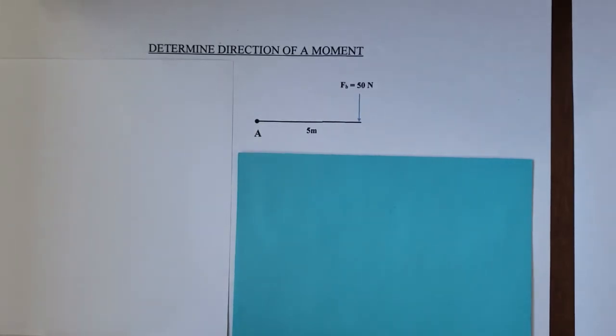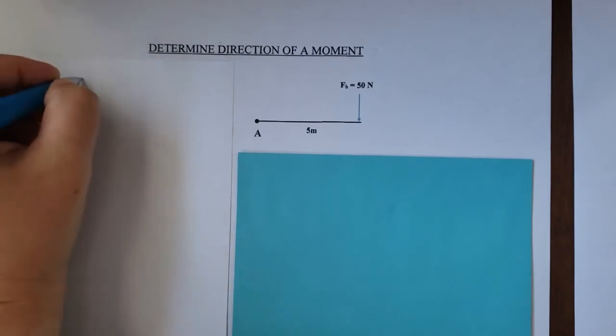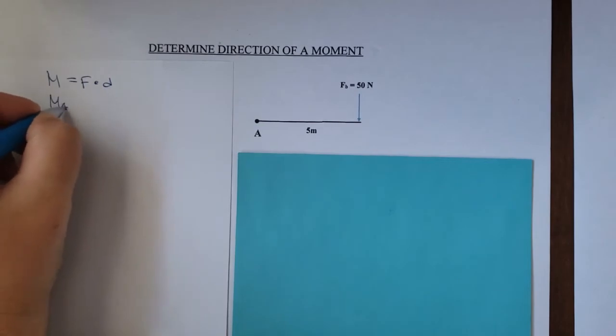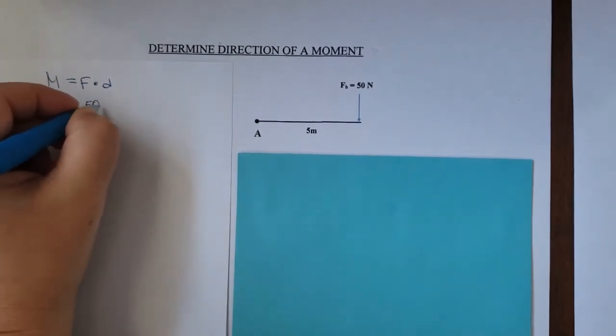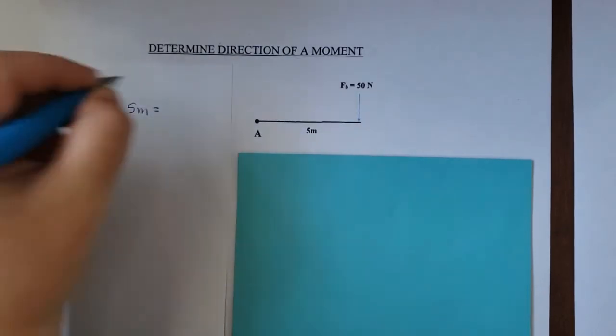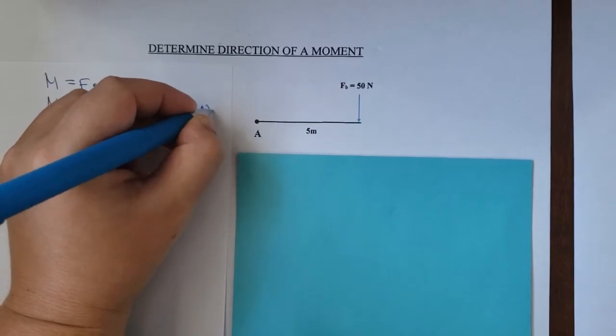We all know from physics that moment is equal to force times distance. So in our case, the moment at point A is equal to 50 newtons times 5 meters, equal to 250 newton meters.